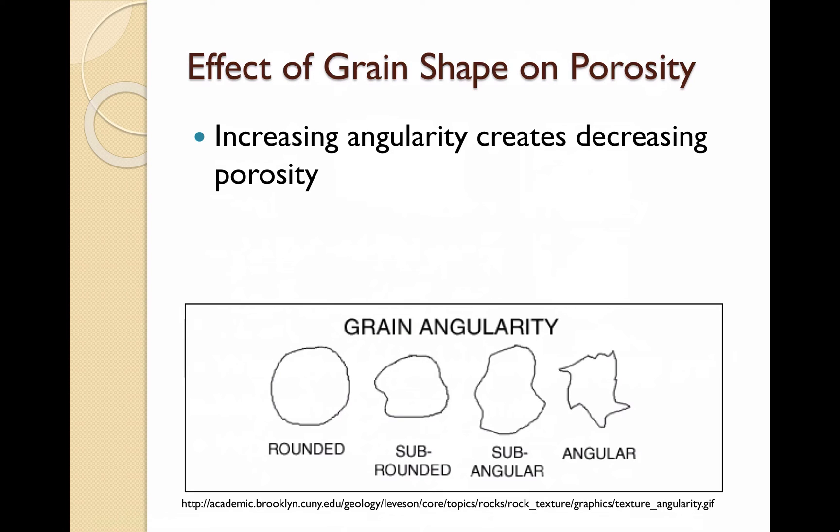Another factor that plays an important role in the porosity is the angularity of the grains. We saw the ideal packing models were all spheres, which gives the highest values of porosity. As the grains become more angular, the space between the rocks decreases, giving lower values for porosity.